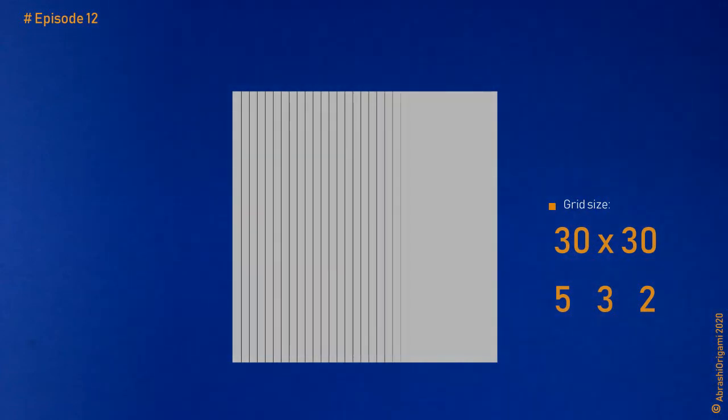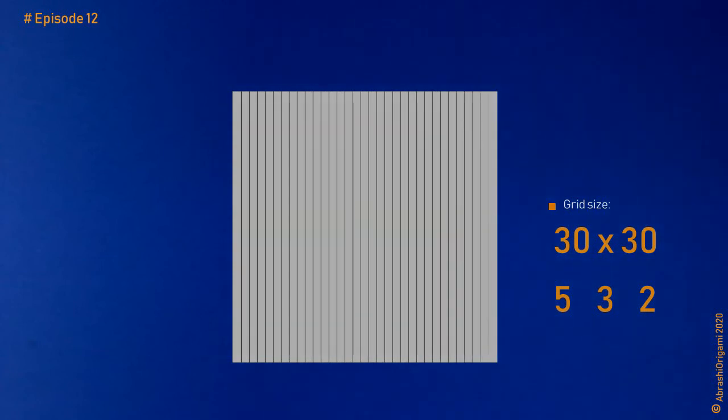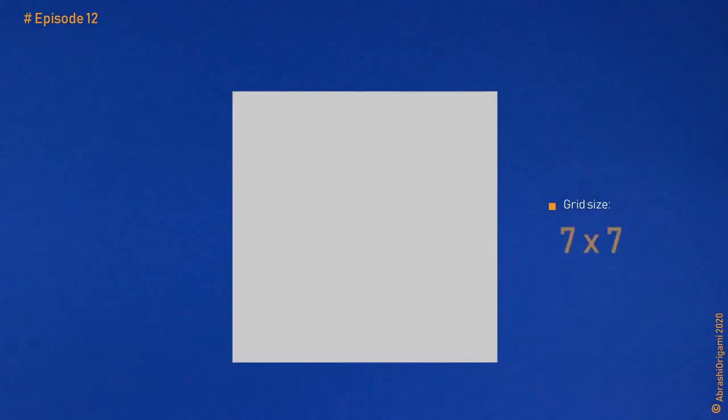Now that we've gone through these two examples, do you understand the general rule? Well, in case you don't, I'll show you yet another example. Let's for instance try dividing a paper into sevenths.